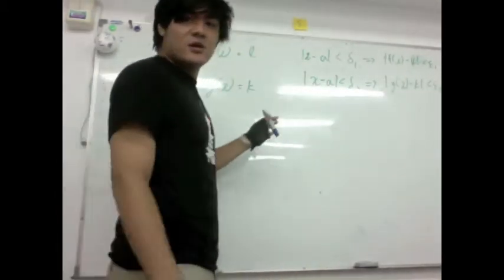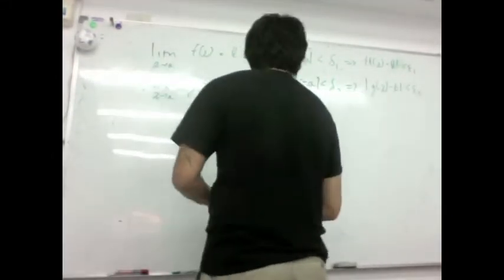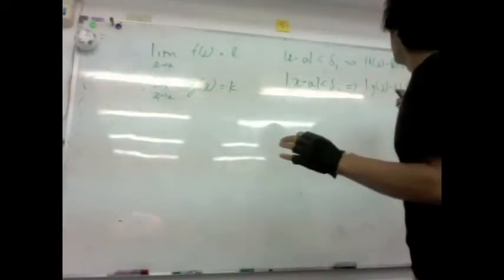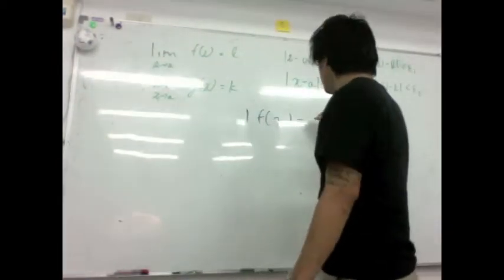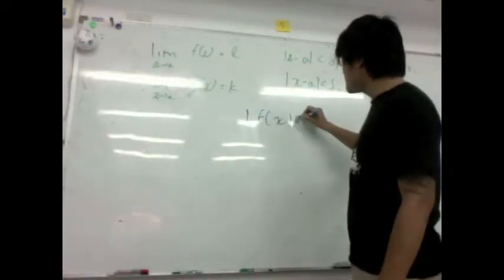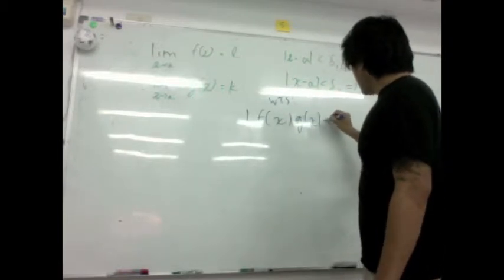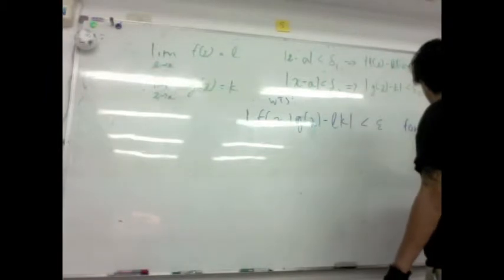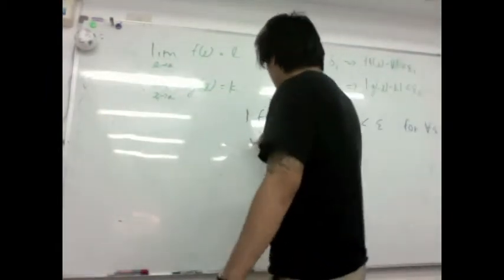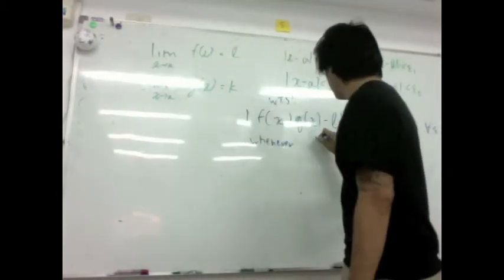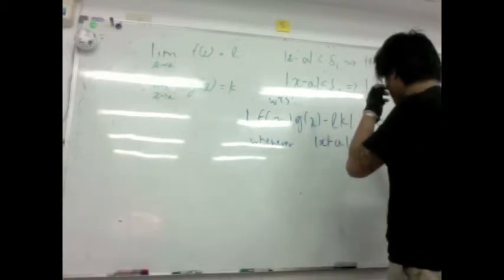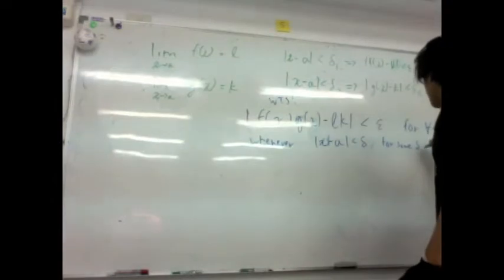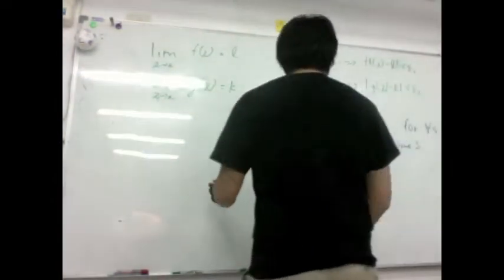So I want to show that whenever x minus a is less than some delta, some value, it forces that this guy, f of x times g of x, I want to show that this guy minus lk is less than some epsilon, for any epsilon, whenever x minus a is less than some delta, for some delta. And it also can be a function of epsilon.